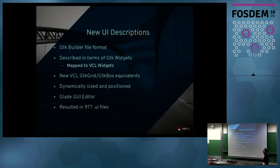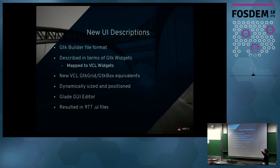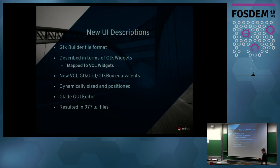We've moved from that to using the GTK Builder file format, where all our UI is described in terms of GTK widgets — though we're actually using our own VCL widgets, just described in the GTK file format. We map that at load time with our own loader. We added resizable widget equivalents to GTK Grid and GTK Box, so now we have widgets that dynamically size and position according to constraints describable in the Glade GUI editor. The result is about a thousand UI files.